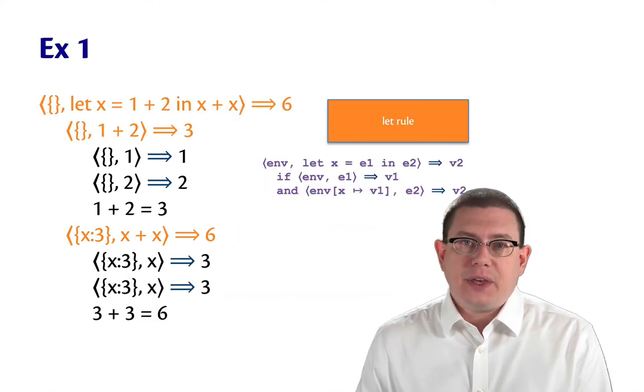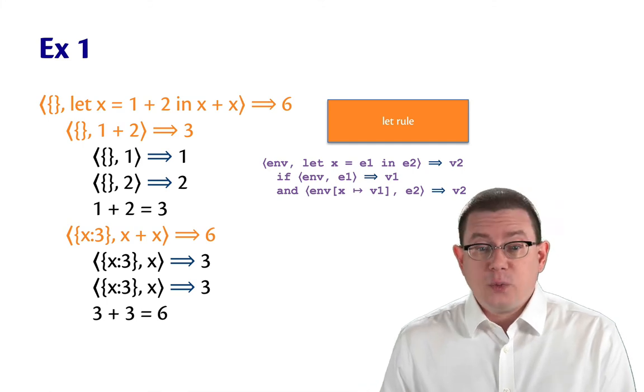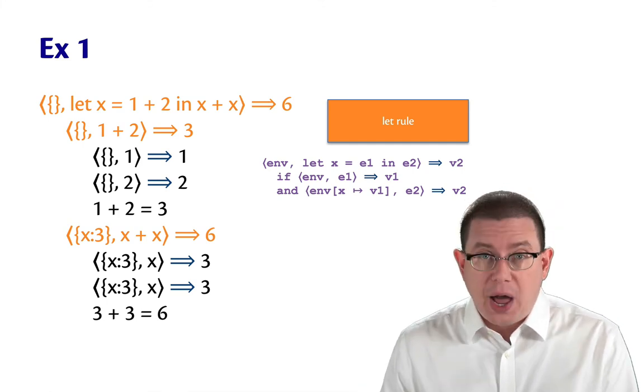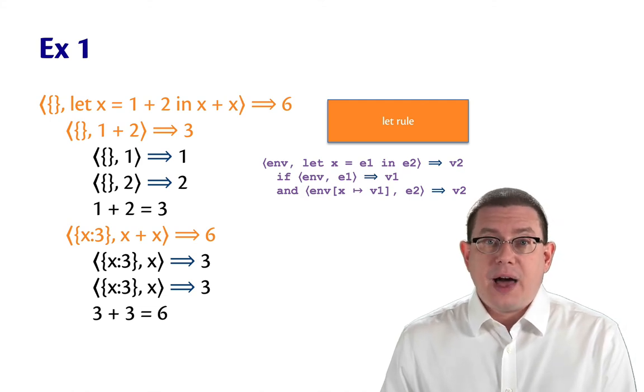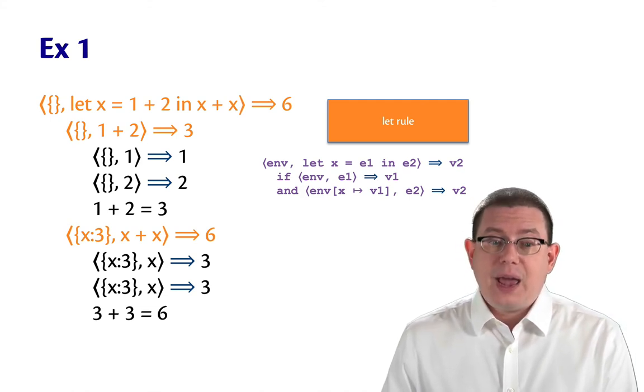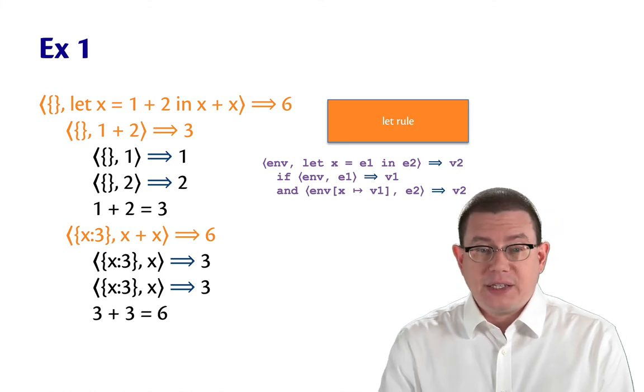And then finally, at the highest level of this tree, I'm using the let rule to figure out how to evaluate the binding expression, record it as the value of X inside the dynamic environment, and then evaluate the body expression.